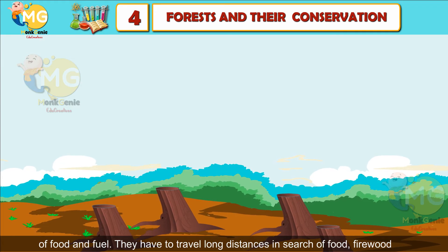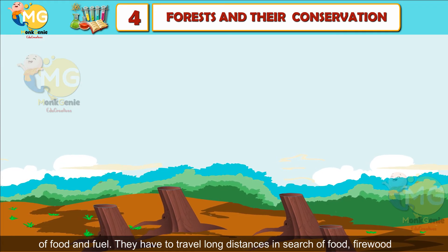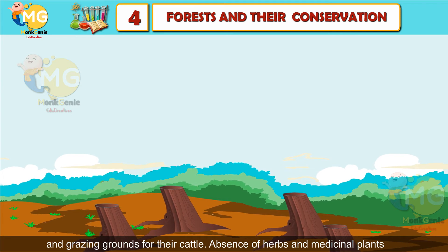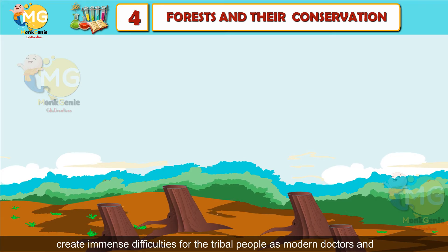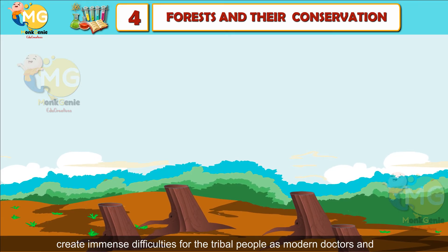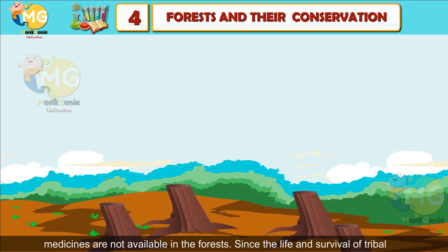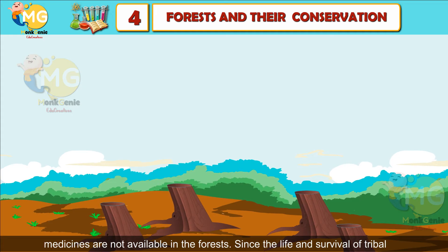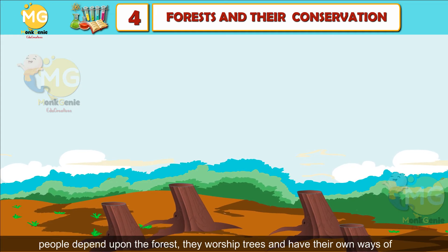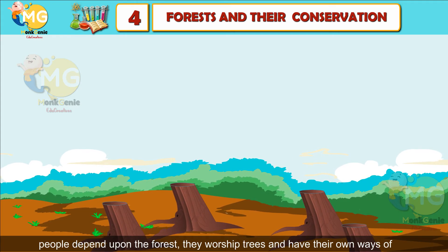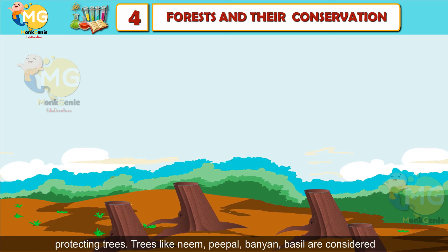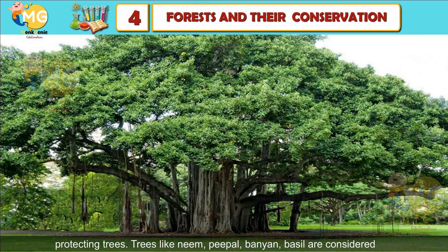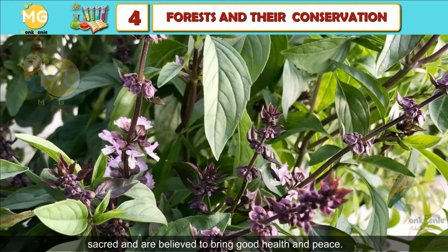They have to travel long distances in search of food, firewood, and grazing grounds for cattle. Absence of herbs and medicinal plants creates immense difficulties for tribal people as modern doctors and medicines are not available in the forest. Since the life and survival of tribal people depend upon the forest, they worship trees and have their own ways of protecting them. Trees like neem, peepal, manian, and mazel are considered sacred and are believed to bring good health and peace.